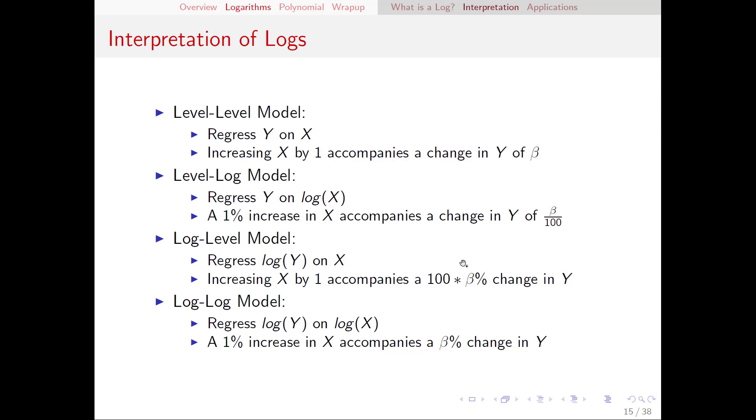Moving on to the log level model this is when we regress the log of y on the left hand side on just x no logs on the right hand side. We're now going to have to flip our interpretation because now x is in levels and y is in log so we have a percentage change interpretation on y this time. So increasing x by one accompanies a 100 times beta percent change in y.